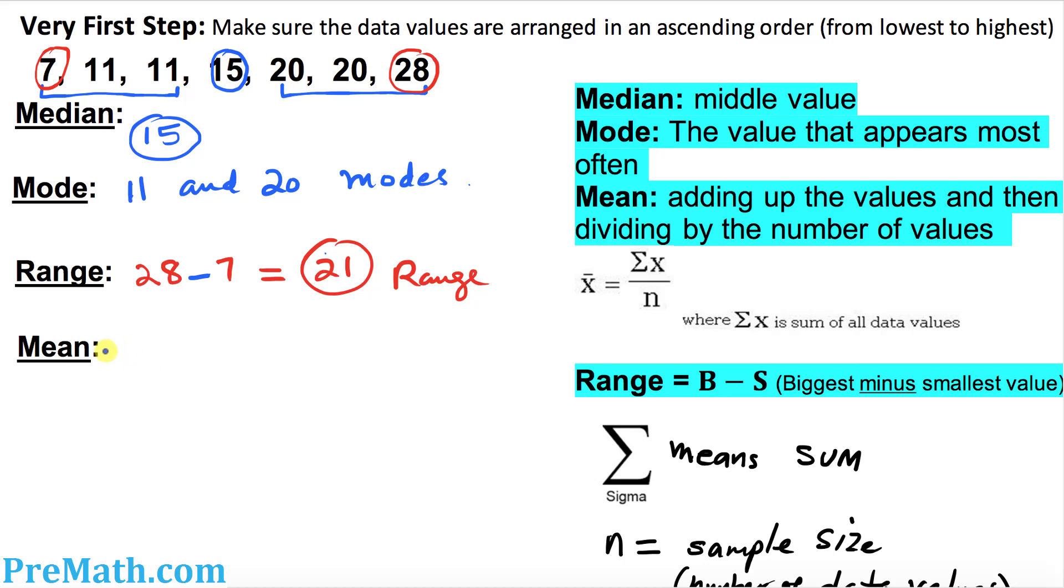And finally, mean. Mean is represented by x bar. The formula is the sum of the x values, that means all the data values divided by the total number of values. So we want to add these up.